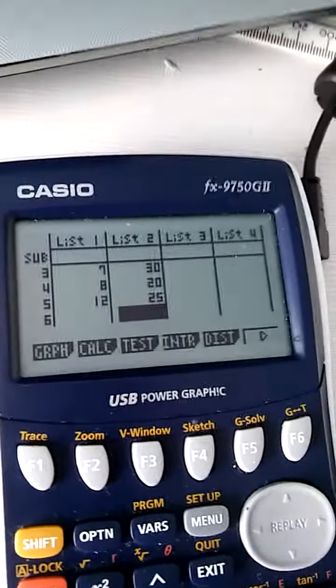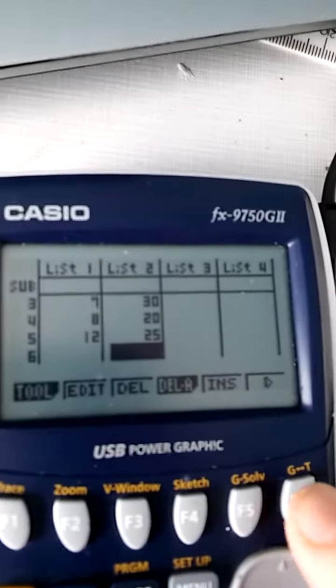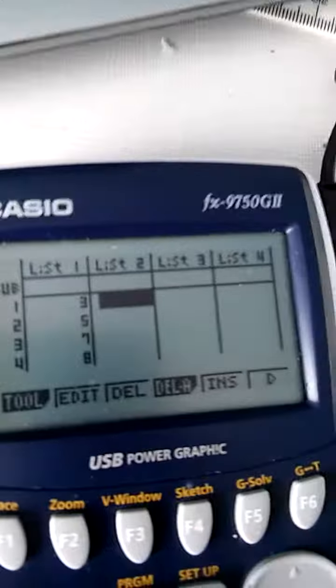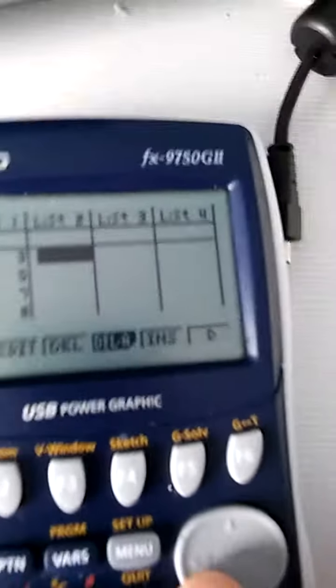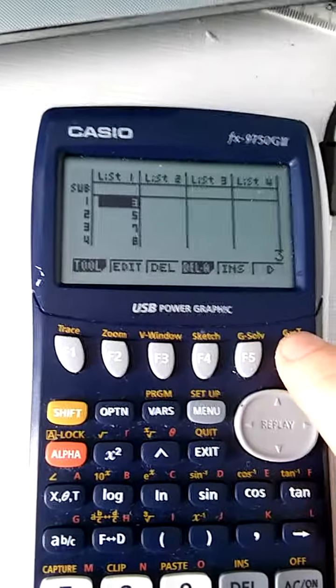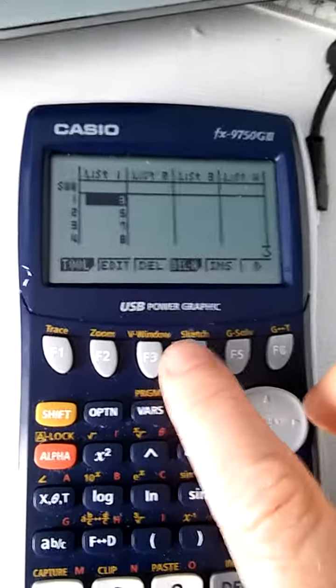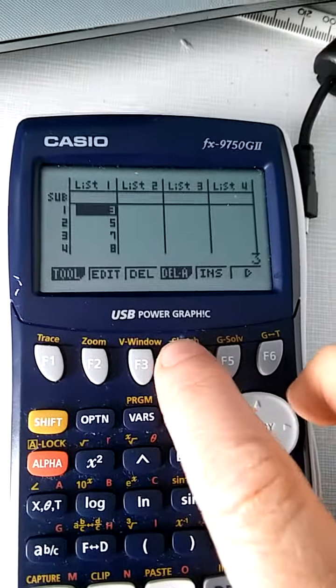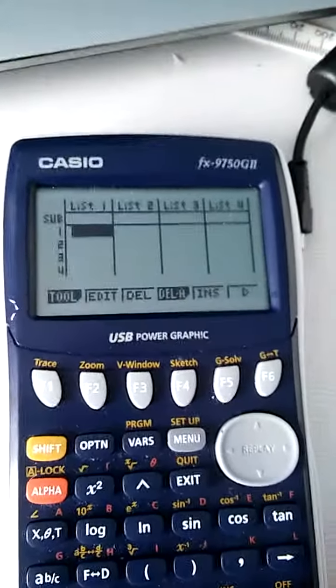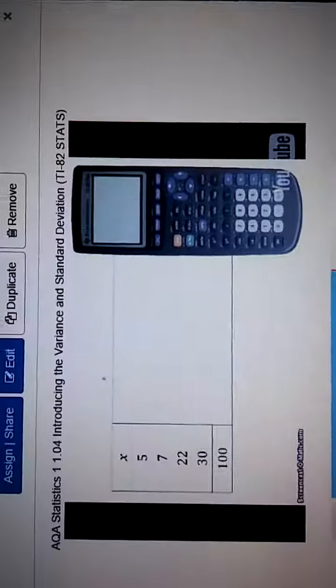If there is anything in the columns, get rid of them. That's F6, delete the column, yes. Go across with the cursor key, F6 if you need to delete the column, F4, F1, gone. Right, got a blank table.